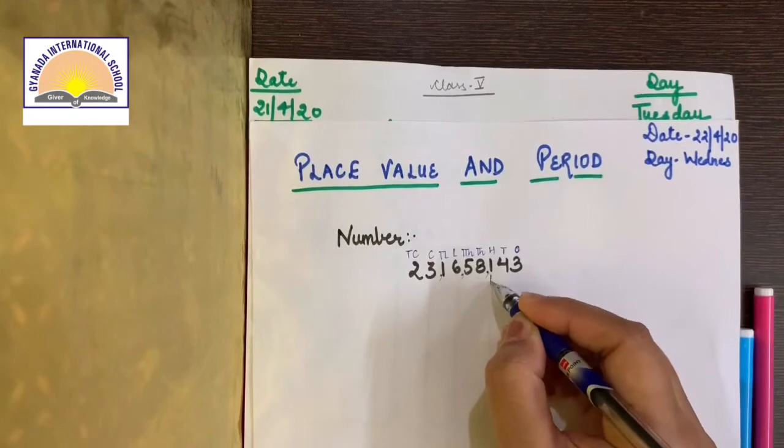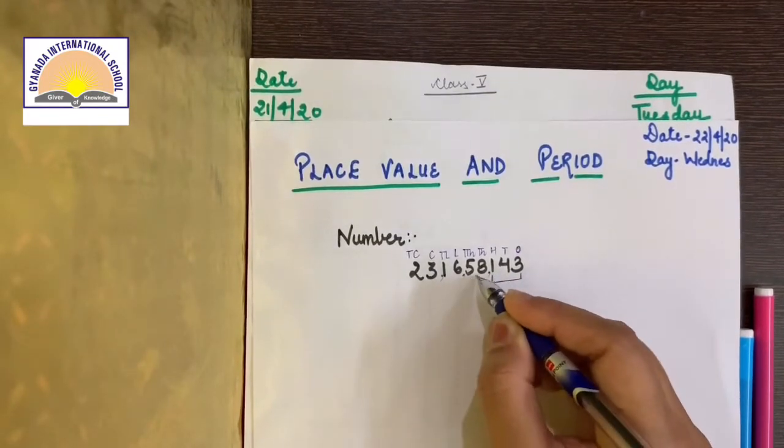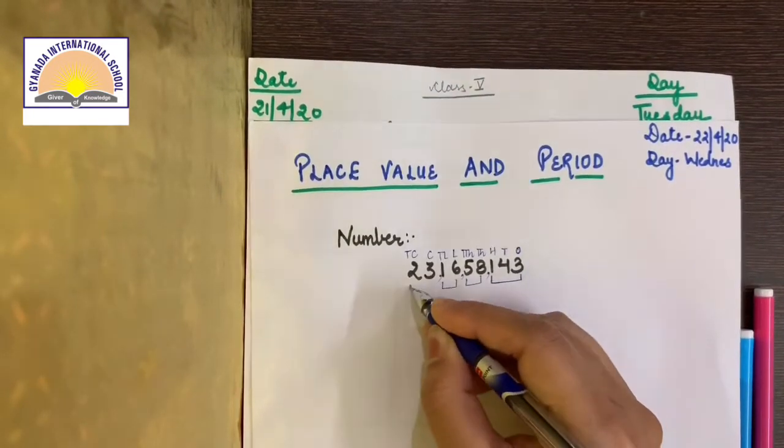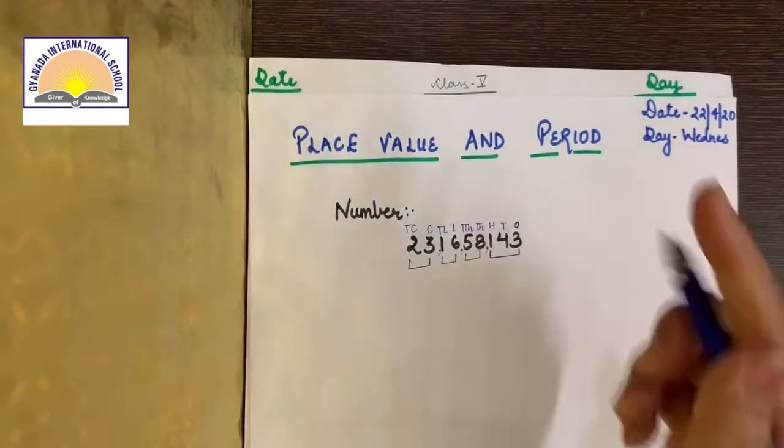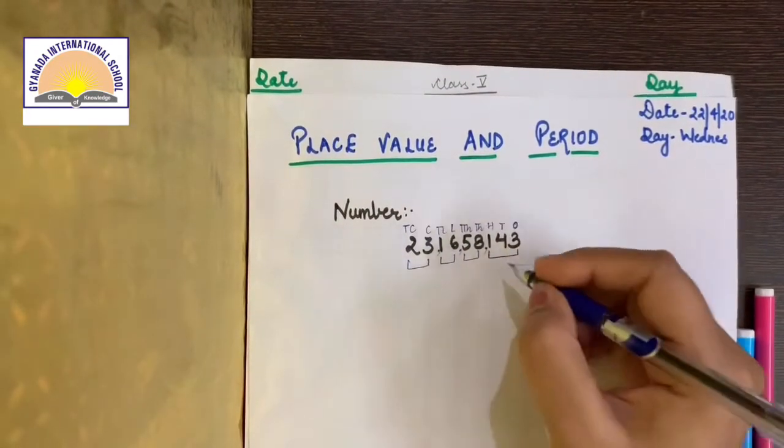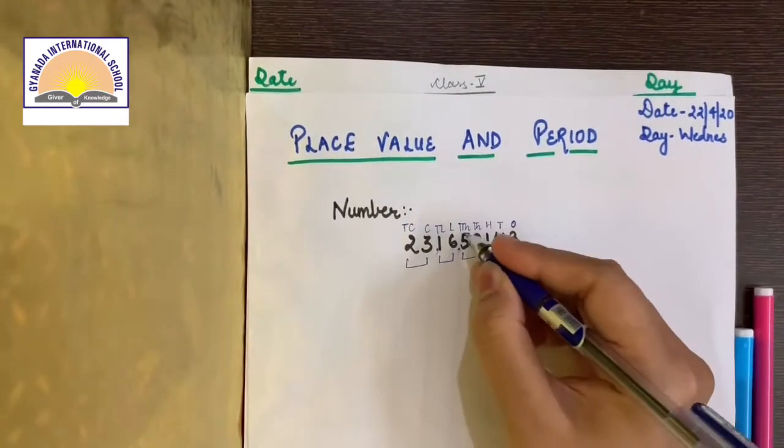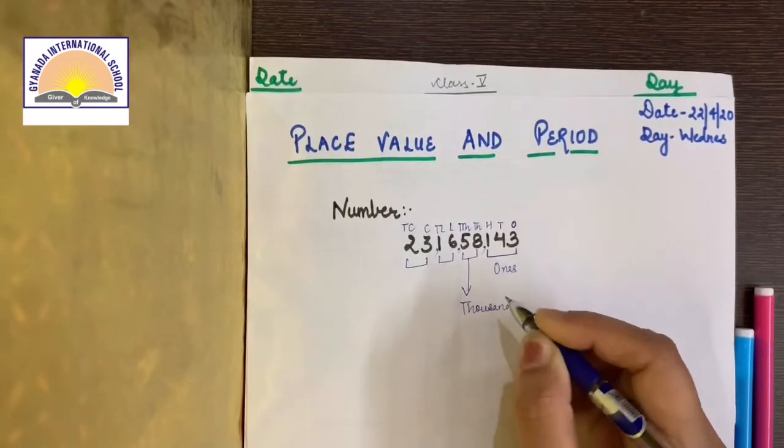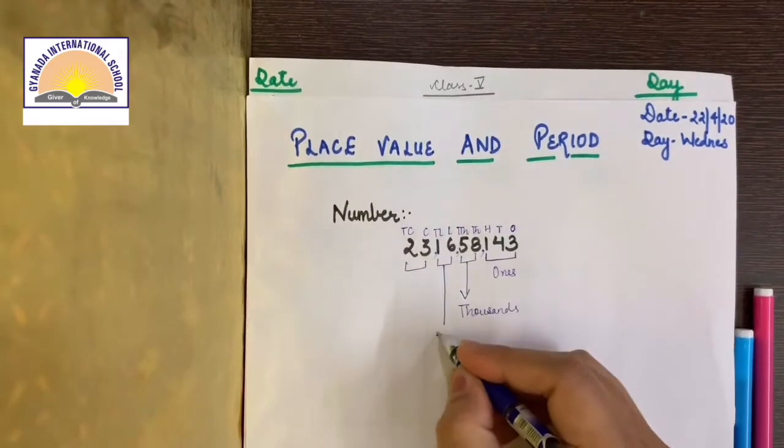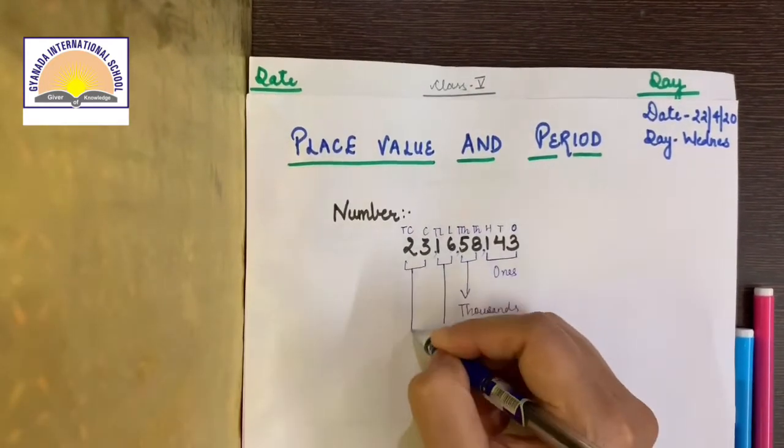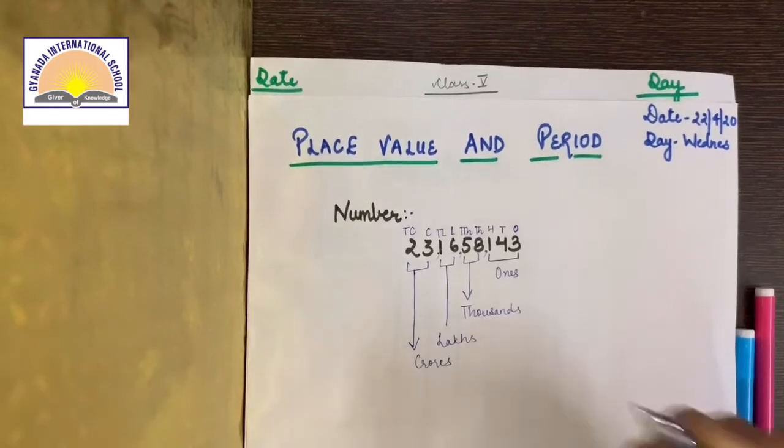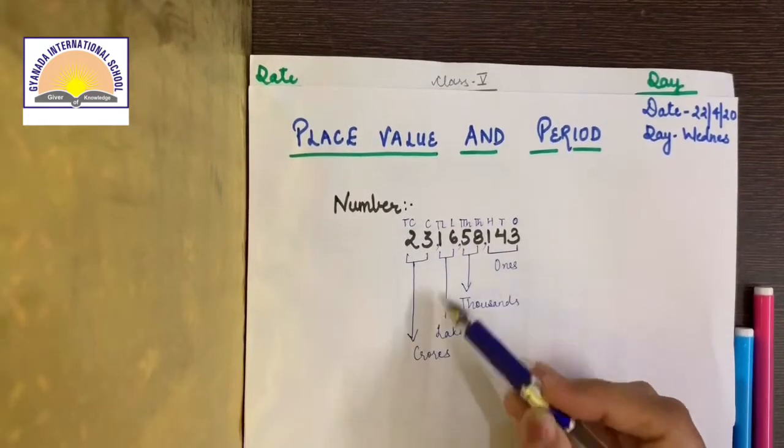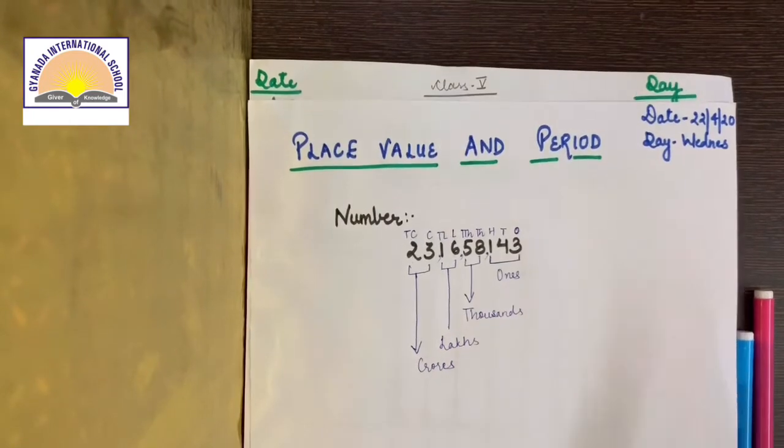This is your period, comma, that the partition is going to be periods. Second period, third period, fourth period. Very easy. Now what is period? Once. Thousand and ten thousand wale period ka naam hai thousands. Lakh and ten lakh wale period ka naam hai lakhs. And crores and ten crores wale period ka naam hai crores. So easy. Understood? So this is the place value and these are the periods. Very easy.